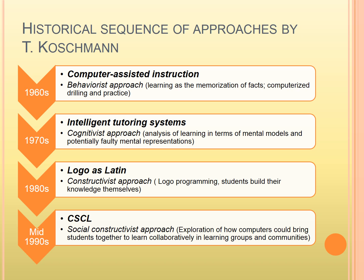There were three earlier approaches to using computers in education before CSCL. The first, in the 60s, was computer-assisted instruction with a behaviorist approach. It was based on learning as the memorization of facts and computerized drilling and practice — and even now some software still uses this same approach. Next, in the 70s, intelligent tutoring systems with a cognitivist approach were based on analysis of learning in terms of mental models and potentially faulty mental representations.